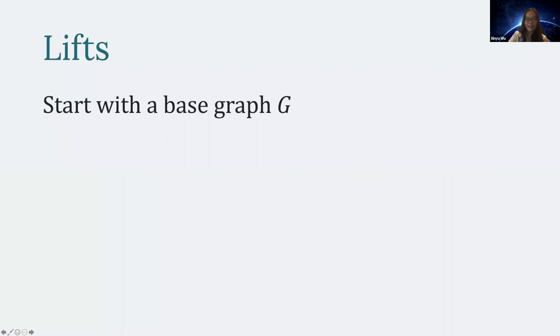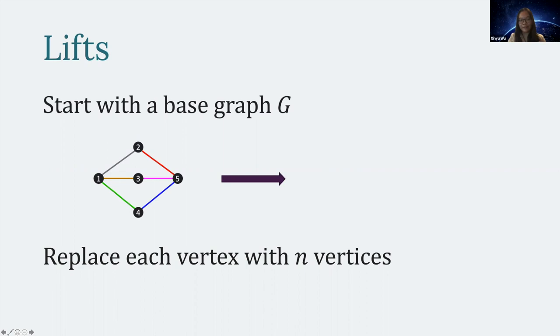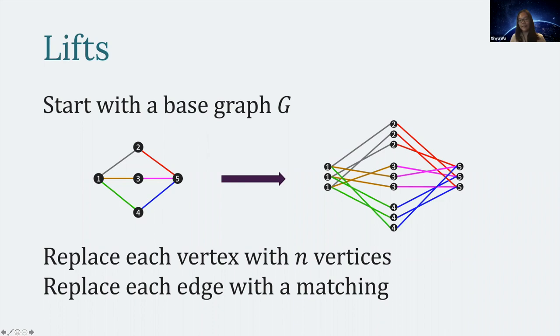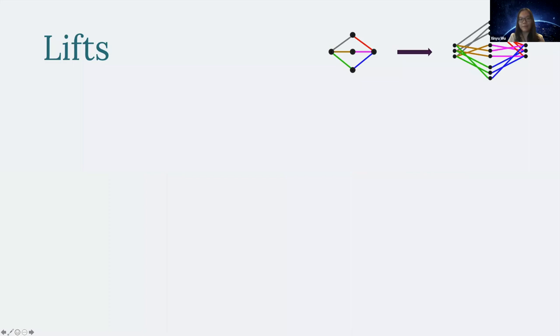A lift is when you have some base graph — in this case a five-vertex, two-three bi-regular complete bipartite graph. For each vertex in the original graph, you replace it with N vertices (here N is three). For each edge in the original graph, you replace it with a matching — so a gray edge becomes a gray matching, the brown edge similarly. You get a graph with 3N vertices and three times the number of edges. This operation is called doing an N-lift, and it depends on what matchings you choose.